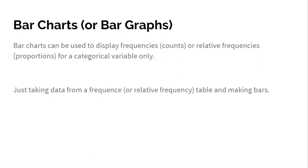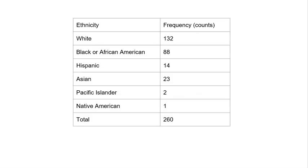The first type of graph you could use for a categorical variable is a bar chart, also known as a bar graph. Bar charts can be used to display frequencies, which are counts, or relative frequencies, which are proportions, for a categorical variable only. You would never use a bar chart if you're dealing with quantitative data.